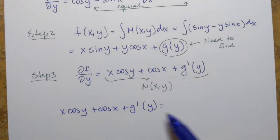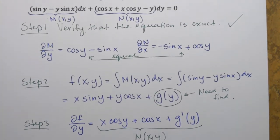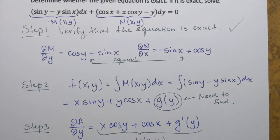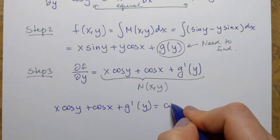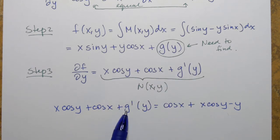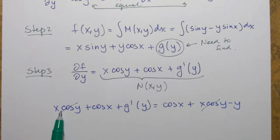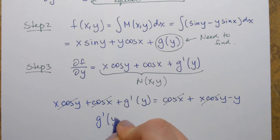Setting what we just obtained — x cosine of y plus cosine of x plus g prime of y — equal to N of xy from the original equation, which is cosine of x plus x cosine of y minus y, we can cancel matching terms from both sides: x cosine of y cancels, and cosine of x cancels. That leaves g prime of y equals negative y.